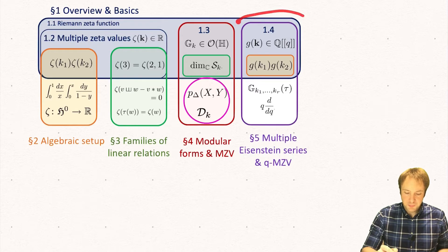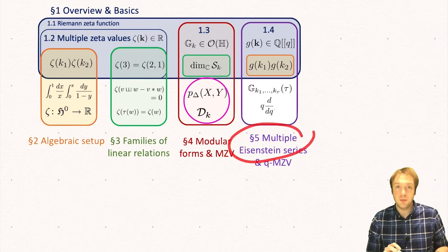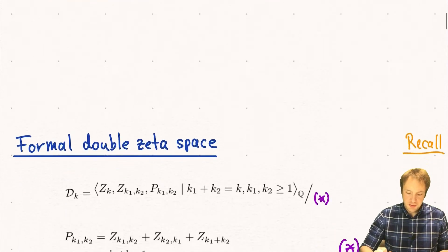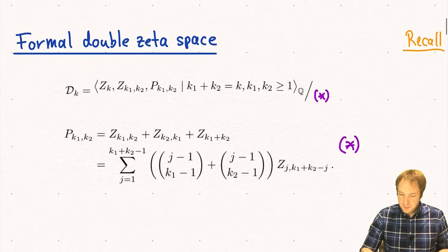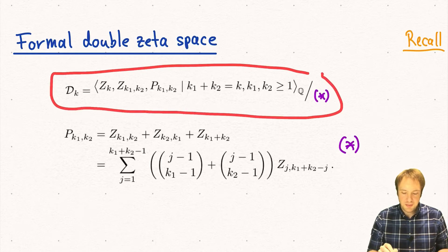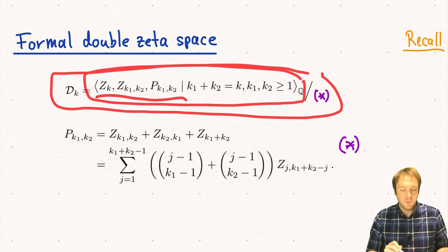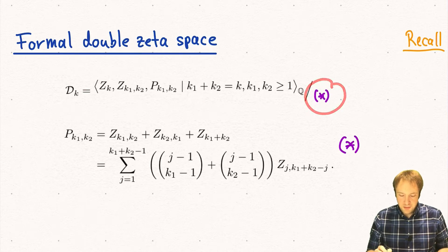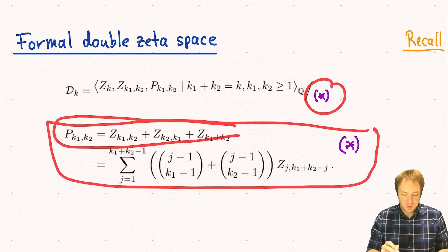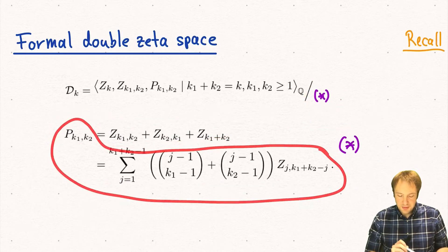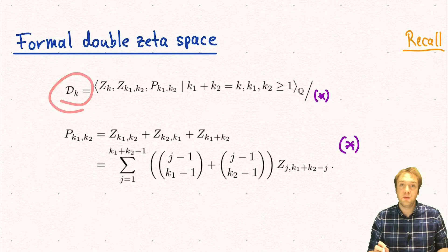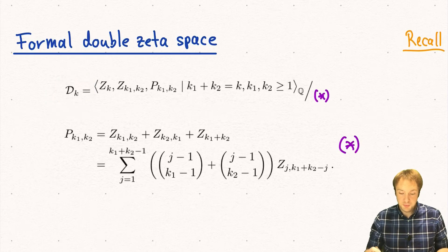Next time we will start with the last section where we talk about multiple Eisenstein series. But first let's recall some notations. The formal double zeta space was defined like this: we denoted it by dk and this was the Q vector space spanned by these formal symbols. Then we divided out these relations which came from the double shuffle relations — the stuffle product and the shuffle product — and using these families of relations we proved several results on this formal double zeta space.